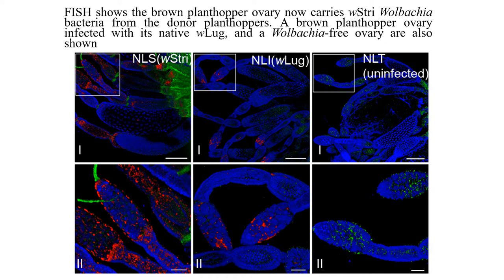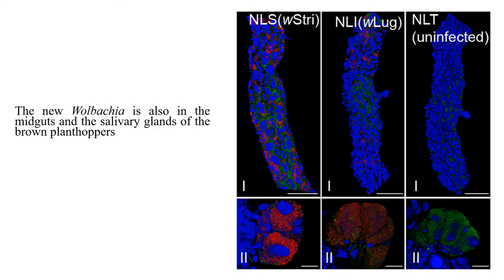The middle picture shows where the native Wolbachia is located — also found in the ovaries but at a much lower density. We have also generated uninfected lines where Wolbachia is not present. We've also looked elsewhere to see where this Wolbachia is present and find it exists inside the midguts of the brown plant hopper, as indicated in the top pictures, and also in the salivary glands.